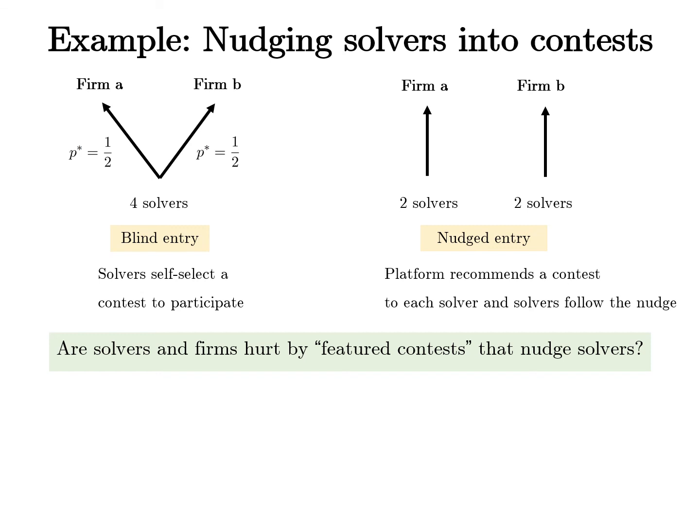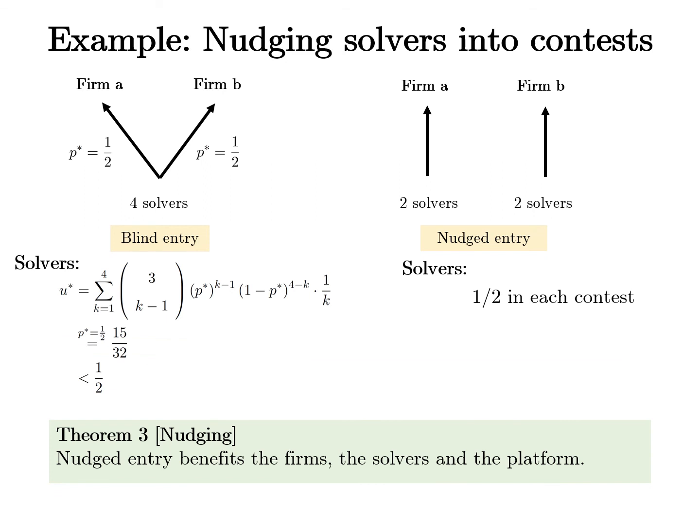We ask whether solvers and firms are hurt by featured contests that nudge solver participation. It is intuitive that nudging solvers would help firms because nudging alleviates inter-firm competition. Interestingly and quite surprisingly, nudged entry always benefits the solvers as well. Under blind entry, when k solvers enter, each has a 1/k probability of getting the top prize. Under nudge entry, it is guaranteed that there are two solvers per contest. This shows that solvers are strictly better off following the platform's nudges, and we can show that following those nudges is an equilibrium.